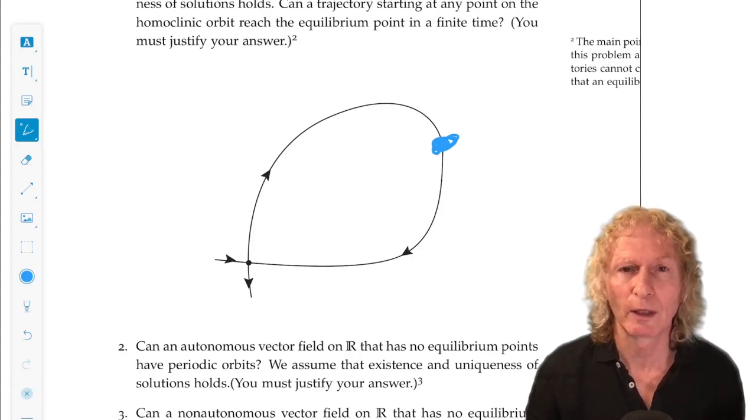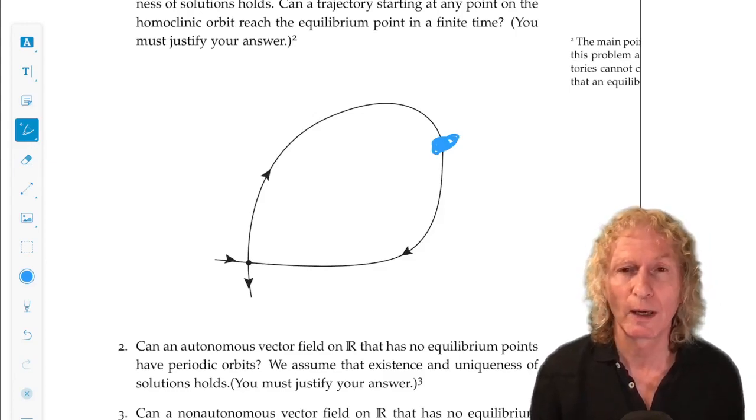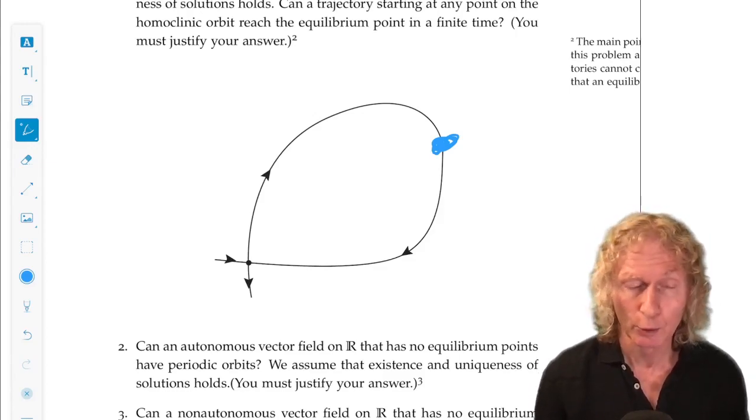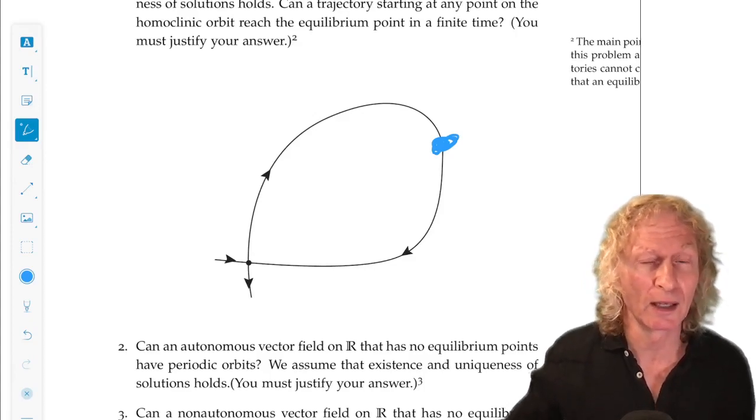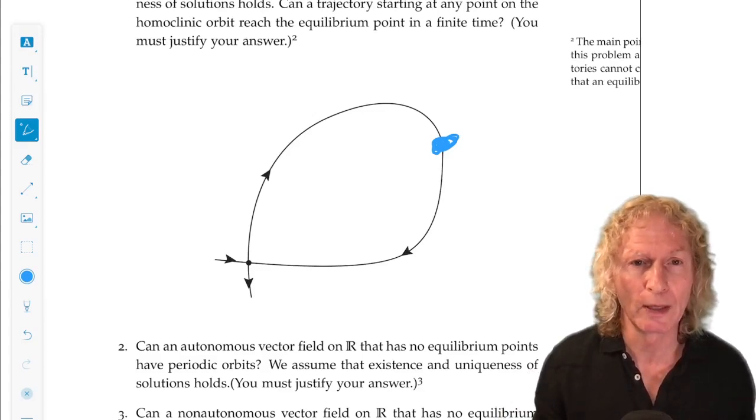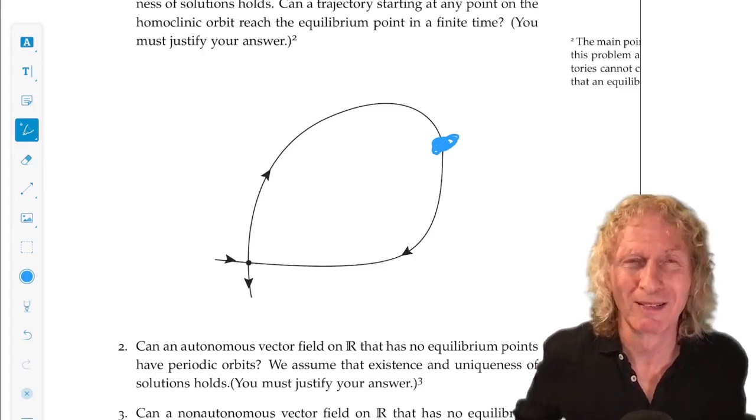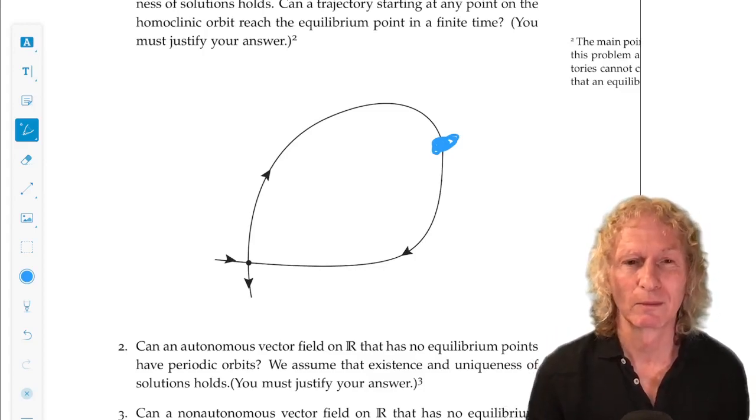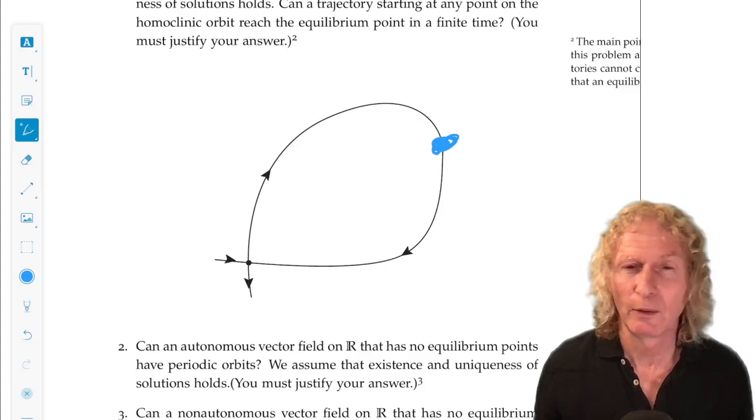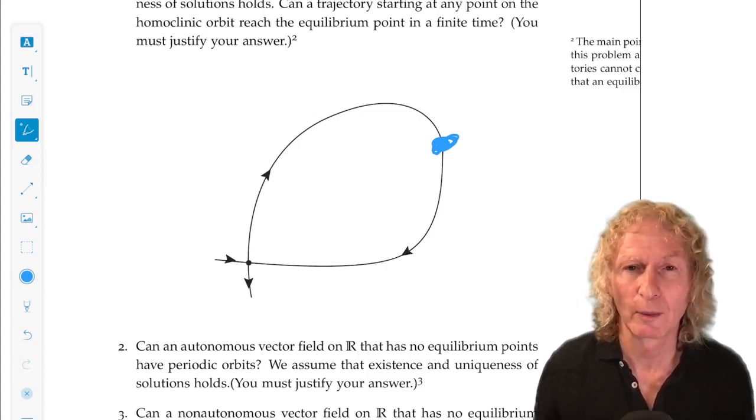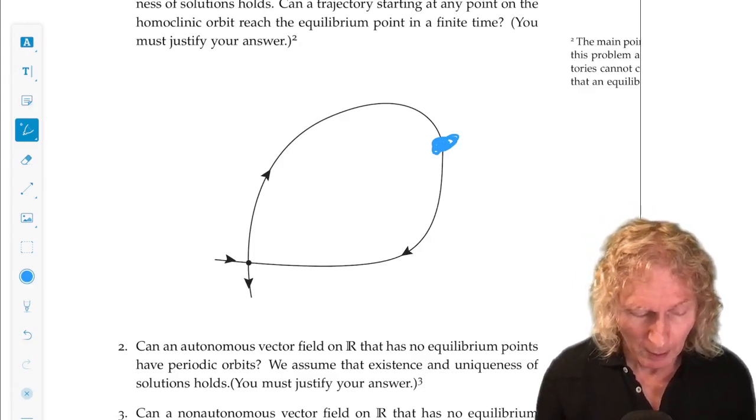And the reason why it's no is because if it could reach the equilibrium point in a finite time, that would violate uniqueness of solutions because you just go to the point where they meet and let them evolve backwards in time. You would have one point having two different futures or backwards, two different paths to evolution. And that you cannot have. And you can make a very elegant proof using the flow property for this problem.